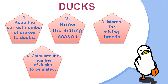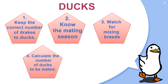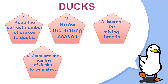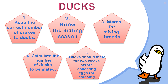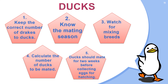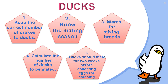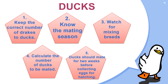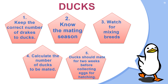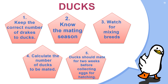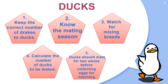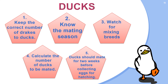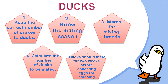For most breeds, one duck can produce around 100 ducklings per season. Fifth, ducks should mate for two weeks before collecting eggs for hatching. This will allow the ducks proper time for mating and result in high fertility in the eggs. It also gives the ducks and drakes time to settle down into mating.